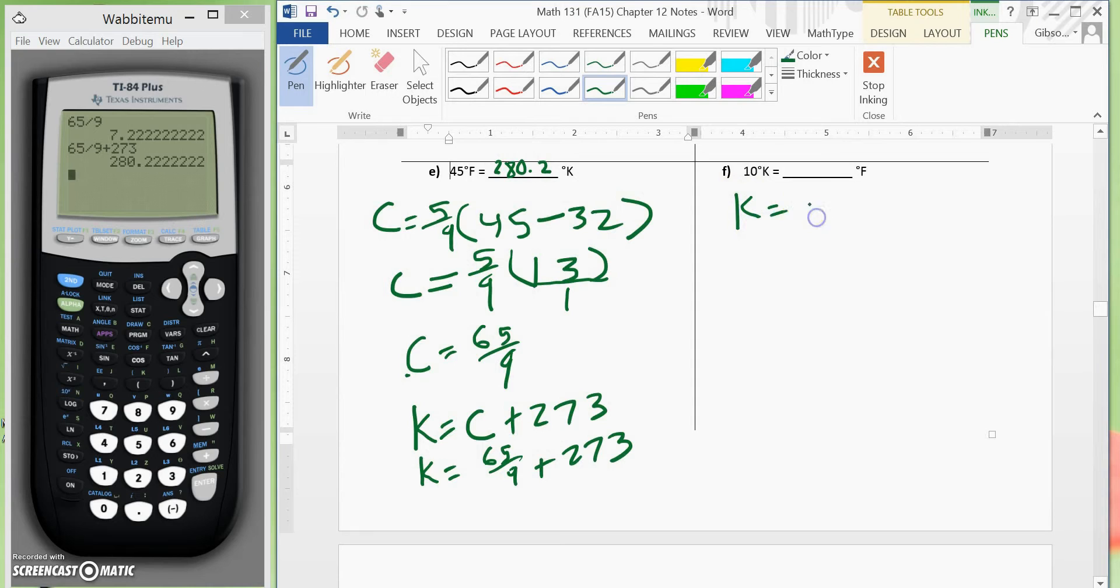So we have kelvins is equal to Celsius plus 273. So we will subtract 273 from both sides. So we will have a negative 263 is equal to Celsius.